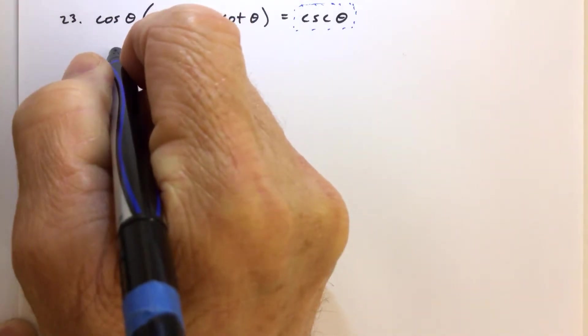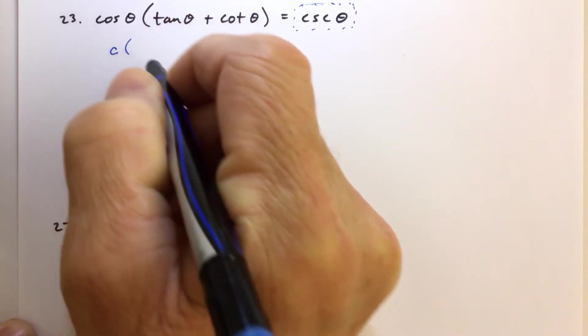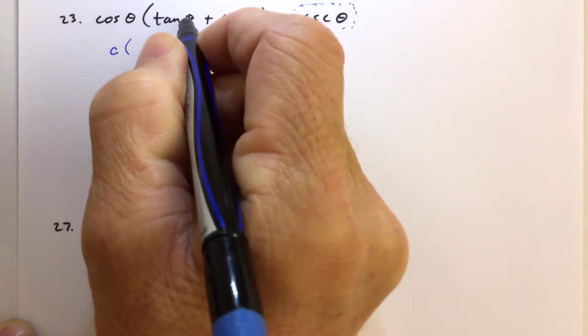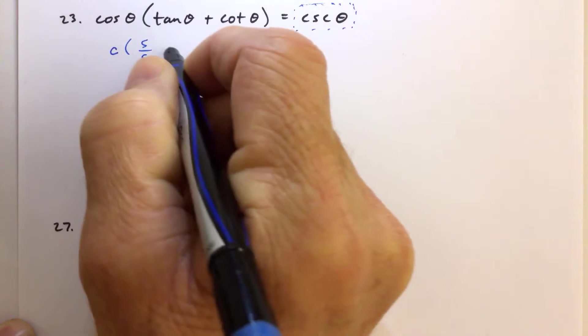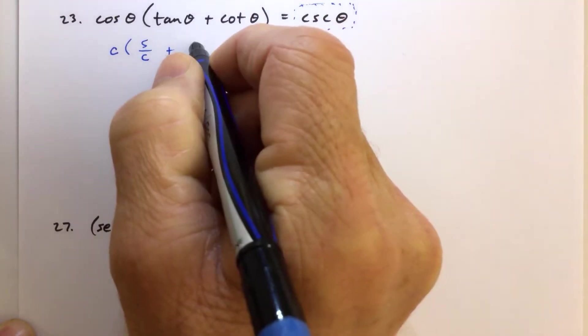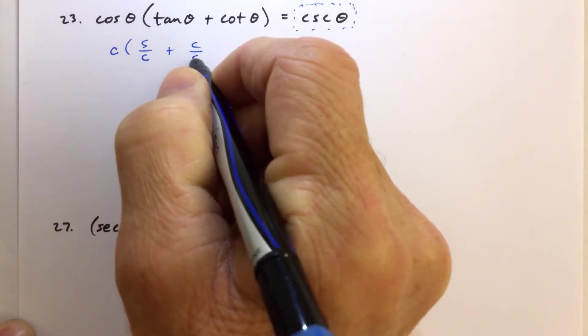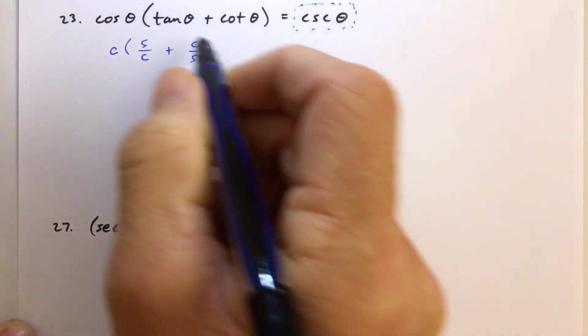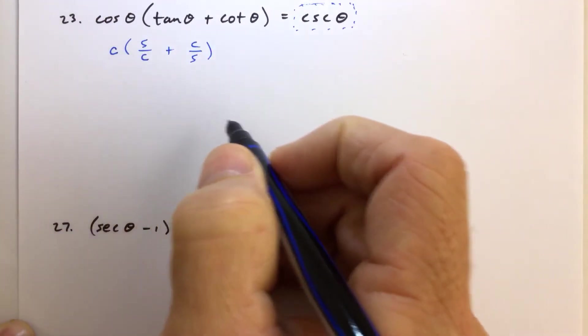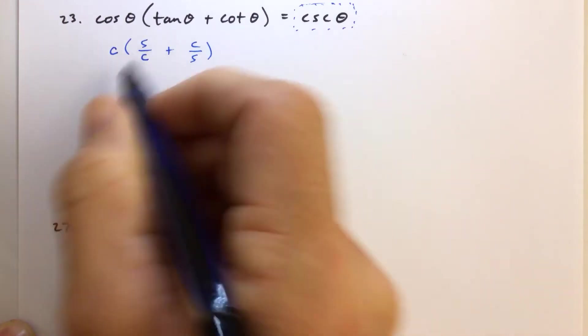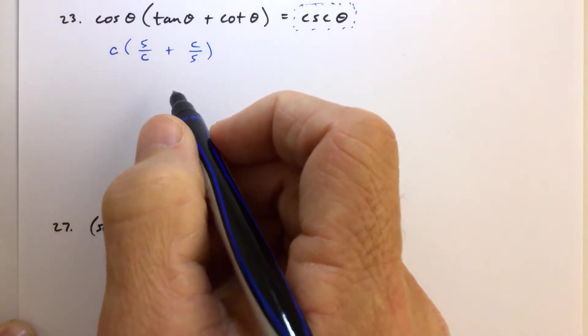So we see here we have cosine of theta, and we're going to replace that with a C, and then we know that tangent of theta can be written as sine of theta over cosine theta, and the cotangent, we can rewrite that as cosine over sine. So once we get everything to sine and cosine, we can just use C and S for those functions, and then we'll put the thetas back in later.